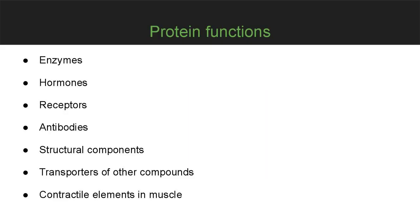The main functions of proteins include: enzymes, which catalyze chemical reactions; hormones, which transfer information from one cell to another; receptors, which are embedded in membranes and interact with signal molecules; antibodies, which protect the body from viral or bacterial infections; structural components like collagen and extracellular matrix proteins; transporters like hemoglobin; and contractile elements in muscles.